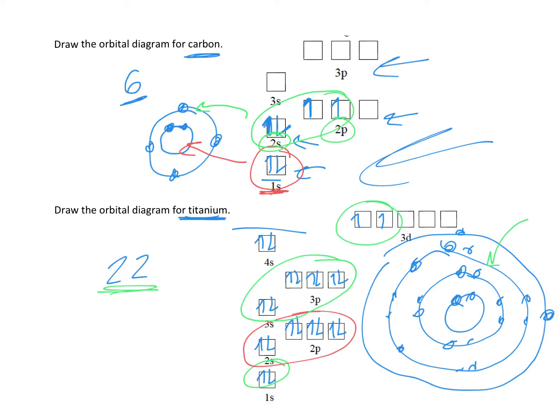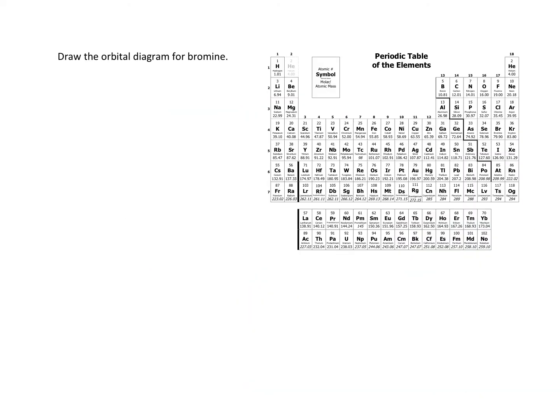What if you don't have them already written out for you? It helps to write the electron configuration. I have another video on this. For bromine, I'm just following the table. If this doesn't make sense, go back and watch the electron configuration video.